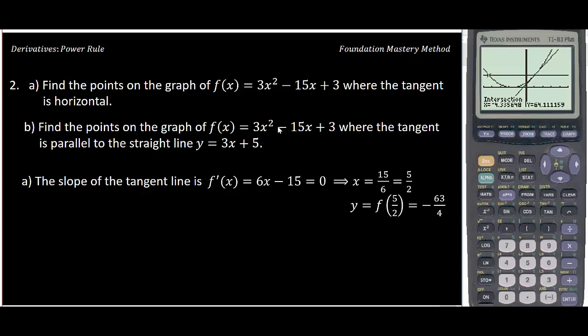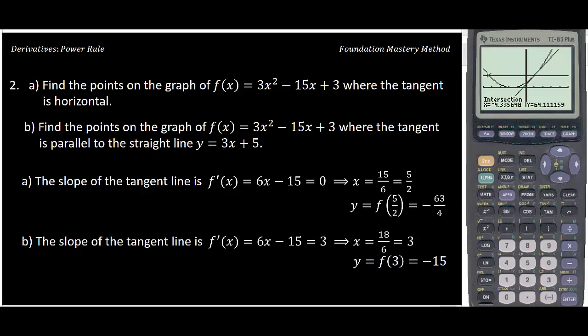In part b, the tangent line will be parallel to y = 3x + 5. That means the slope of the tangent line here will be the same as 3, because they're parallel. That's why we're saying the derivative 6x - 15 will be the same as the slope of this line since they're parallel. When I solve, I get x = 3. When I'm getting x = 3, I plug it back into the equation of the graph, and that gives y = -15. So the point on the graph where the tangent line is parallel to this will be (3, -15), and we are done for this problem.